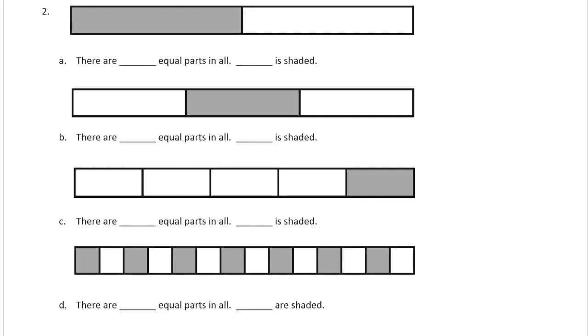There are how many equal parts in all? There are two equal parts, and one of them is shaded. There are one, two, three equal parts in all, and one of them is shaded.